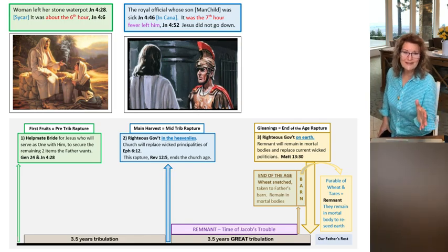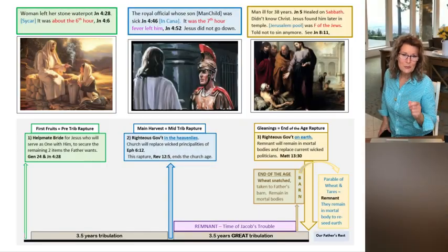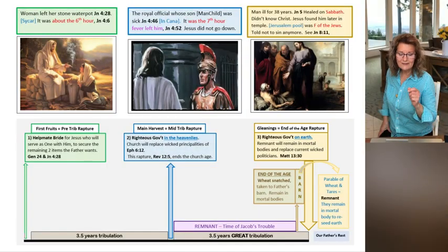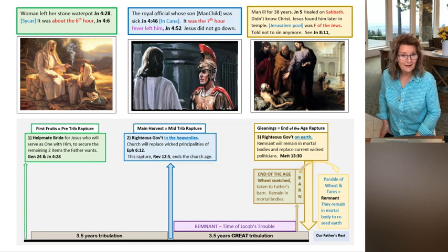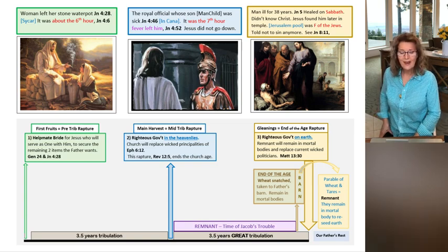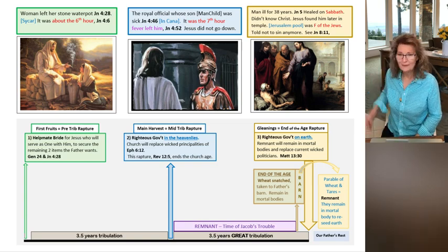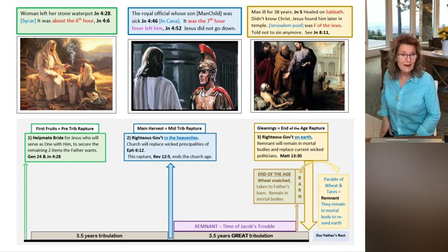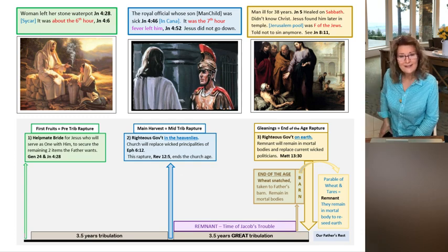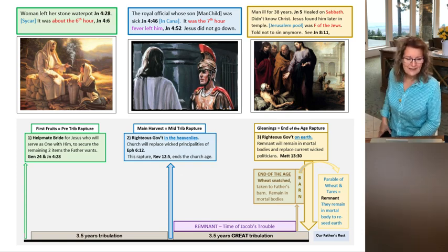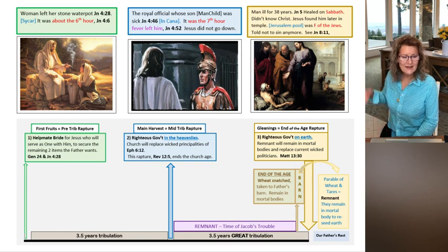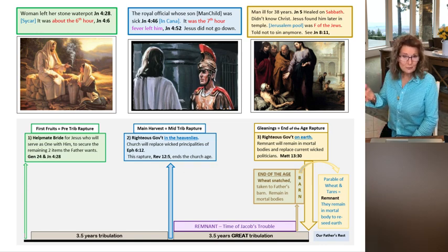The next thing Jesus does in the book of John is he goes to the pool at Bethesda, and it clearly shows he sought out this man specifically. The man had been ill for 38 years. Jesus heals him—he doesn't even know who Jesus is. Jesus slips off, and then later looks for him and finds him in the temple. This happens in John 5, on the Sabbath, in Jerusalem.